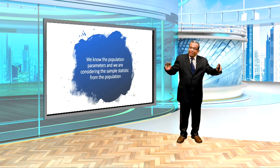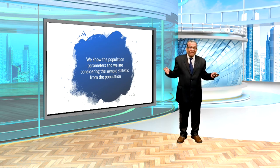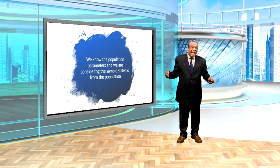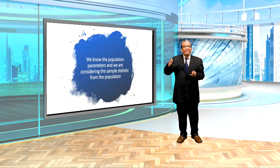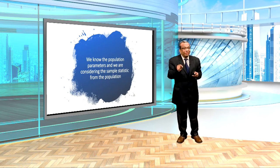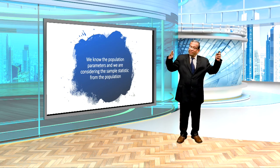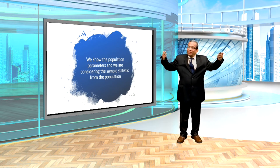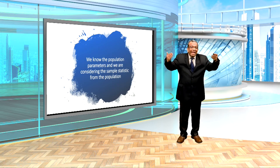This may not be the case in the real world. In real world, we may not know the population parameters — we will know only the sample statistic, and from the sample statistic we will estimate the population parameters. This we will see in the next lecture. But in this lecture, we know the population parameters: what is the population, what is its mean, and what is its standard deviation — everything we know. And from this, we derive the sample statistic.